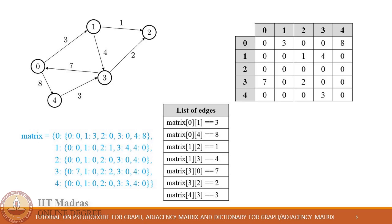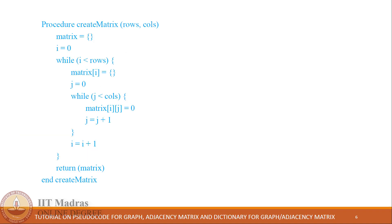This particular table refers to the list of all the edges in the graph. matrix[0][1] equals 3 because that's the place where the number 3 is stored, which represents the edge from vertex 0 to 1. This representation in the list of edges table is exactly identical for the adjacency matrix as well as the given dictionary matrix.